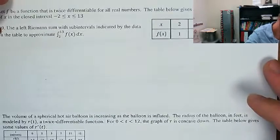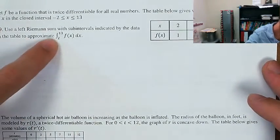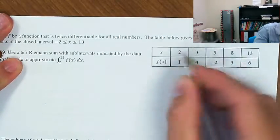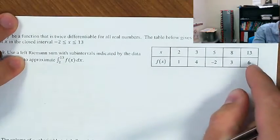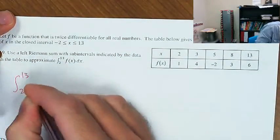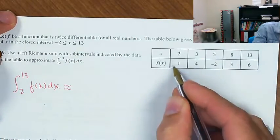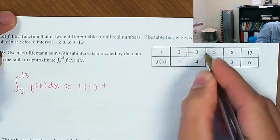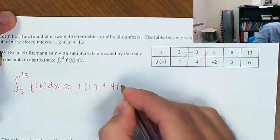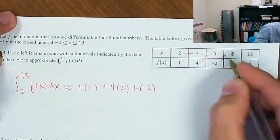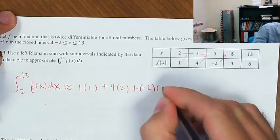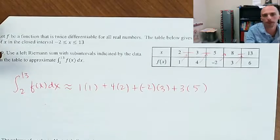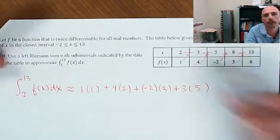Let f be a function that's twice differentiable. Use a left Riemann sum to approximate the integral from 2 to 13. We're going to use our left endpoints: f(2), f(3), f(5), and f(8) — not f(13). Using the left edge: 1 × 1, plus 4 × (5 − 3 = 2), plus negative 2 × (8 − 5 = 3), plus 3 × (13 − 8 = 5). That's a left Riemann sum — height comes from the left edge of each subinterval.